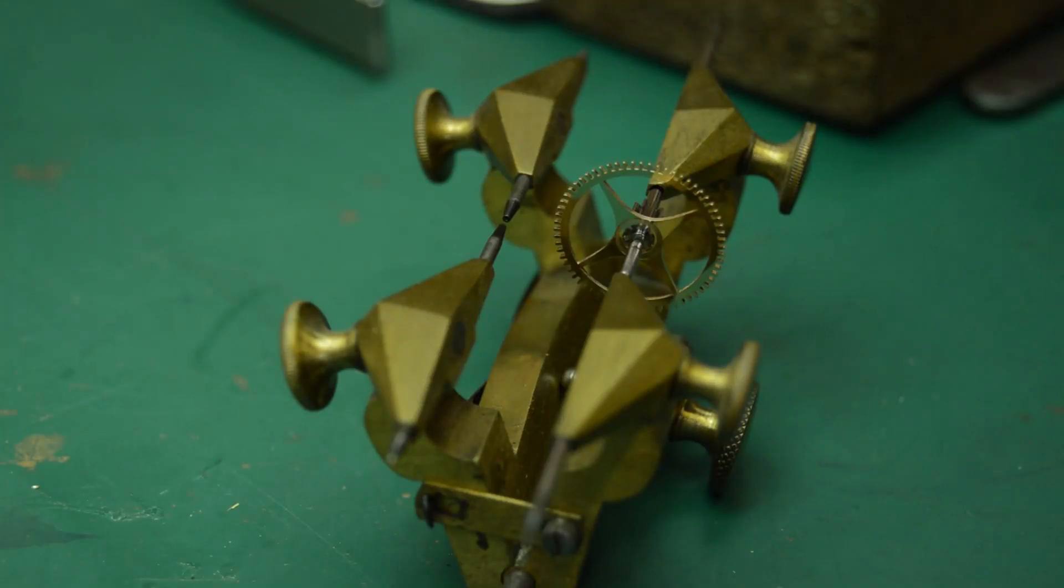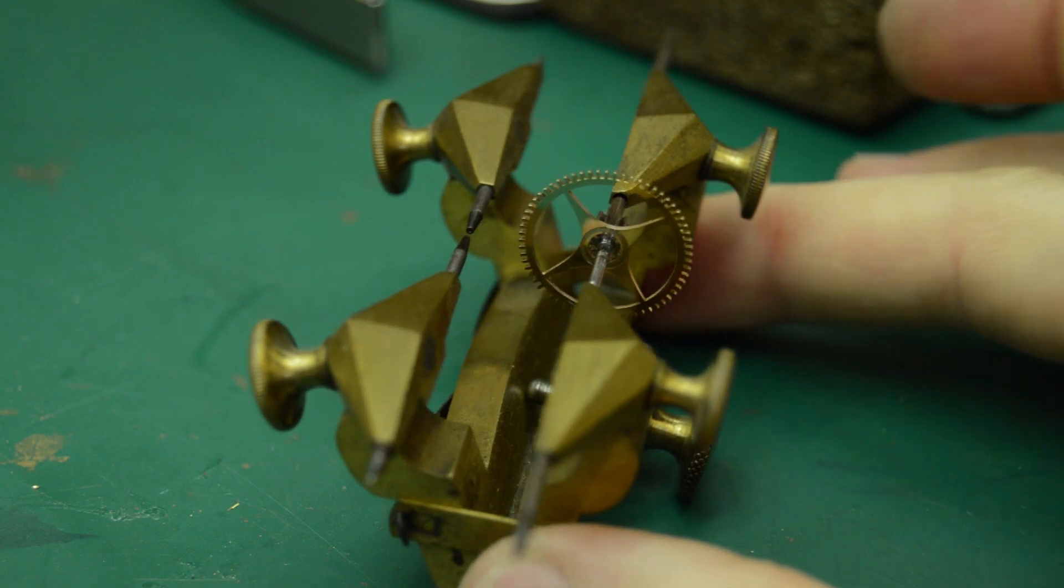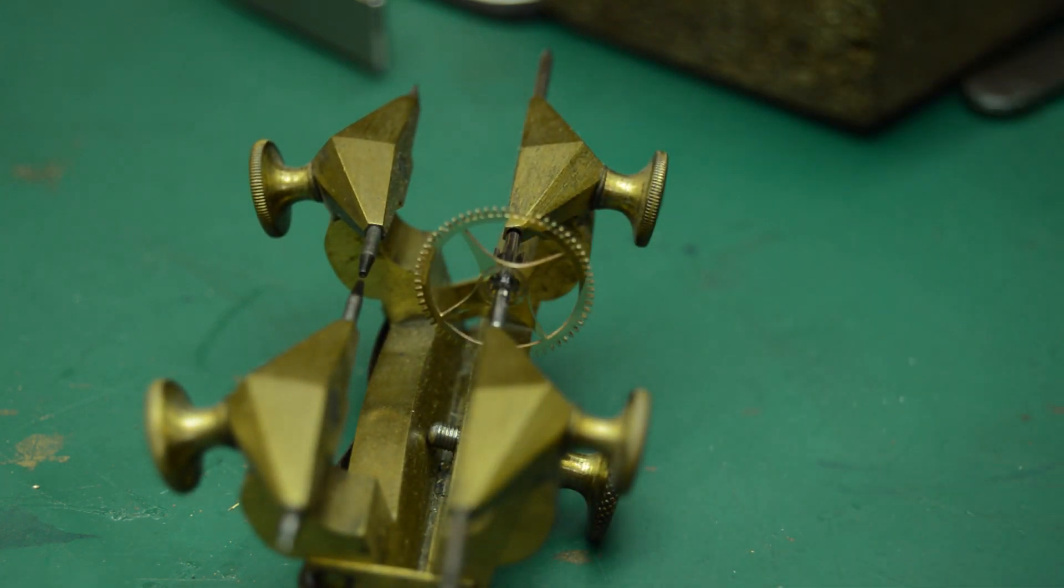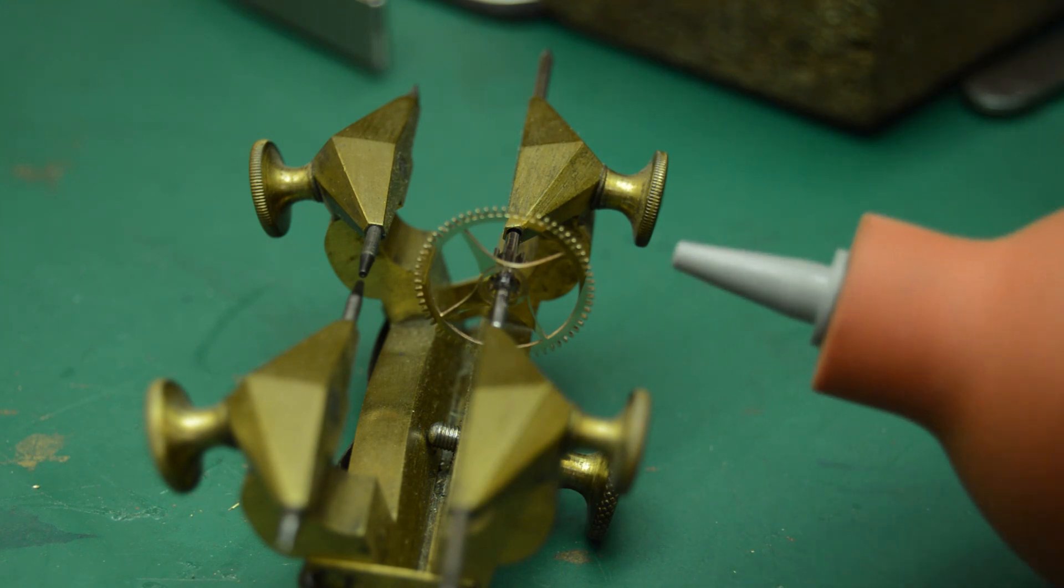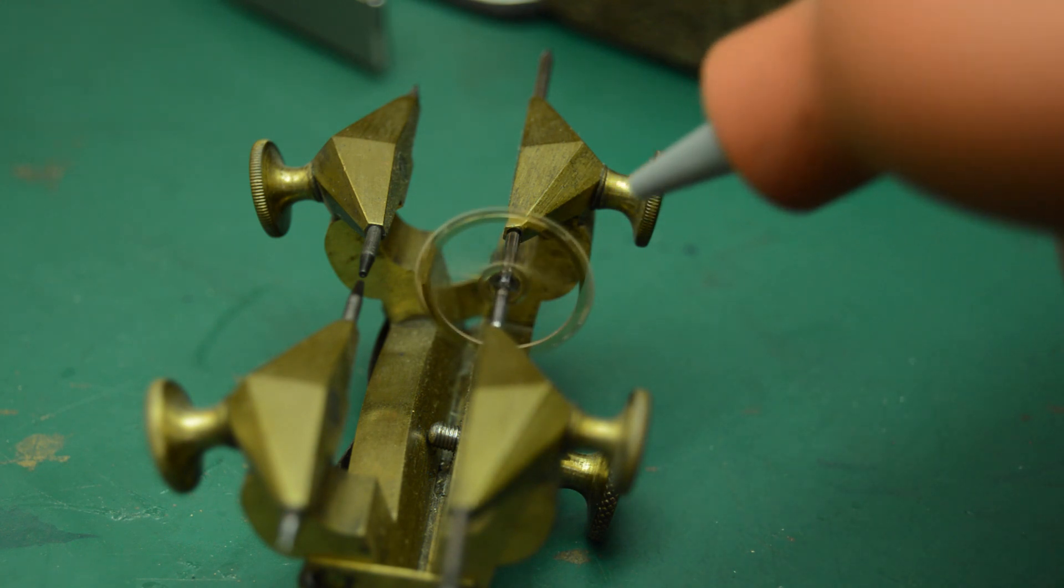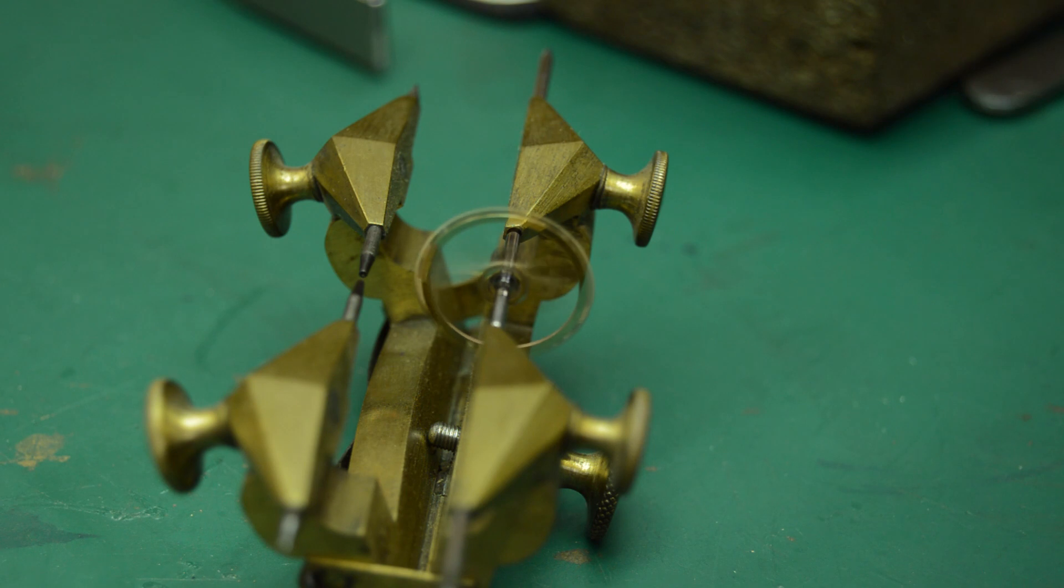Before completely committing to driving the wheel onto the arbor, I just wanted to check its concentricity. So I'm doing that in this little watchmaker's depthing tool. And I'm not sure if it will come across on the camera very well, but I'm happy with that.